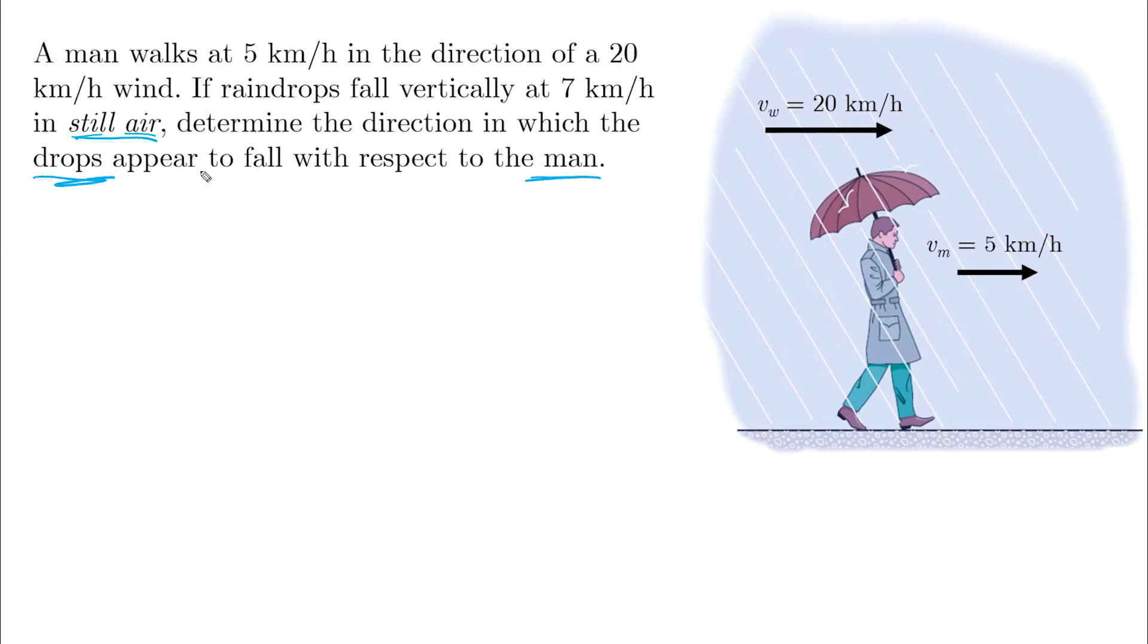And the hint to solve this problem is still air, which in other words means as if the wind is not moving, which means also 7 km per hour with respect to the wind. So the drop falls vertically at 7 km per hour with respect to the wind, or Vr, rain relative to W, wind is equal to 7 km per hour vertically down.